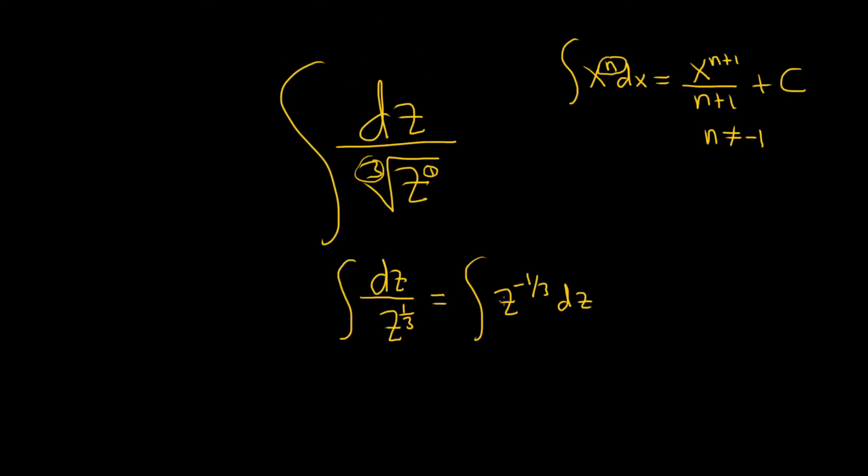Alright, so now we're ready to use the power rule. Our n is negative 1 third, so let's go to the side and add 1 to it. So negative 1 third plus 1, that's the same thing as negative 1 third plus 3 thirds. So if you add these, you get negative 1 plus 3, so you get 2 thirds.